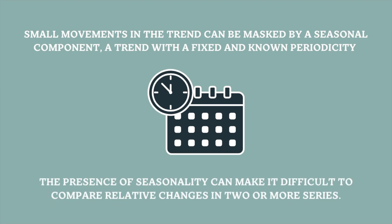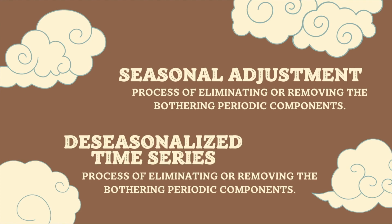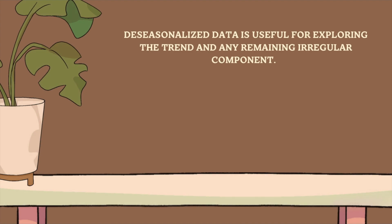The presence of seasonality can make it difficult to compare relative changes in two or more series. Seasonal adjustment is the process of eliminating or removing the recurring periodic components. The result of the seasonal adjustment is the de-seasonalized time series. De-seasonalized data is useful for exploring the trend and any remaining irregular component.